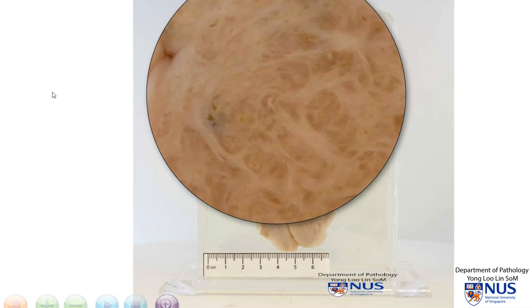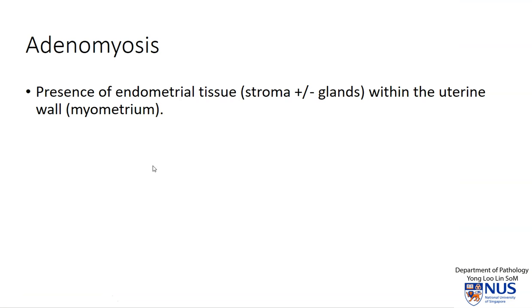So what actually is adenomyosis? Adenomyosis is defined as the presence of endometrial tissue, which can be in the form of endometrial stroma with or without endometrial glands, within the uterine wall — by this we mean the myometrium.